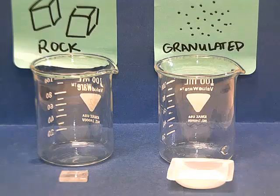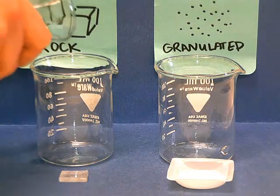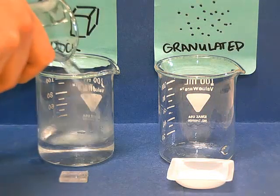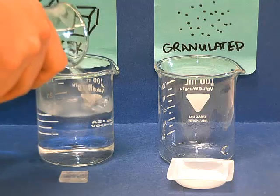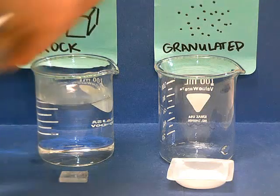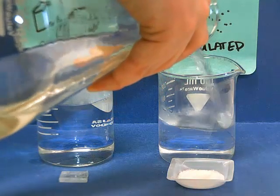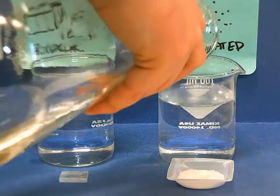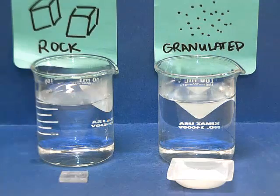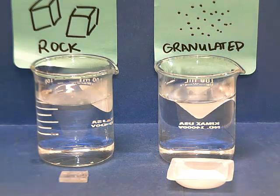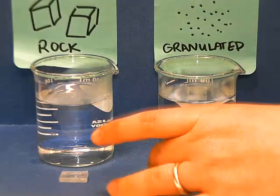I'm going to add the same amount of water to each beaker. Here I'm adding 100 milliliters of water and 100 milliliters of water to the other beaker. We're going to place both types of salt and see which one dissolves first.